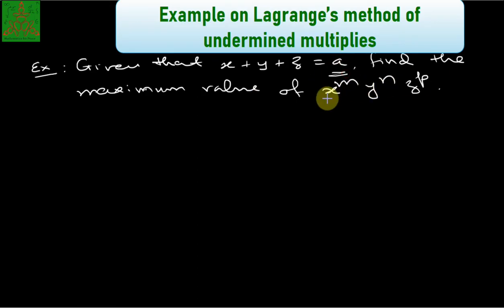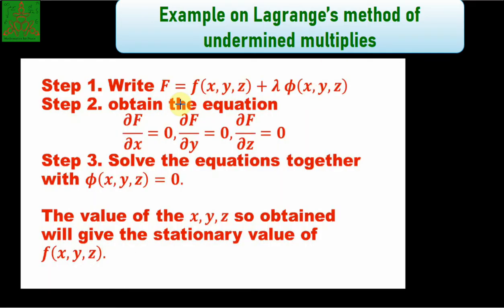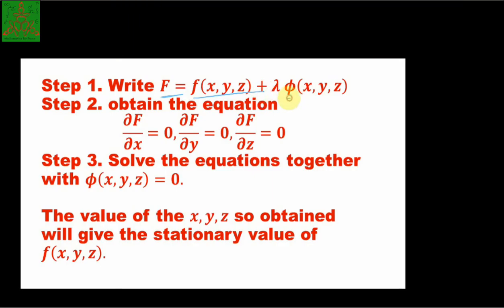Let us recall the working rules to calculate the extremum value for a function with a given condition using Lagrange multipliers. The working rule tells you that you first write down the function F. The small f is the function for which you need to calculate the minimum or maximum value. The phi of x, y, z gives you the constraint — the extra condition that is given to you.